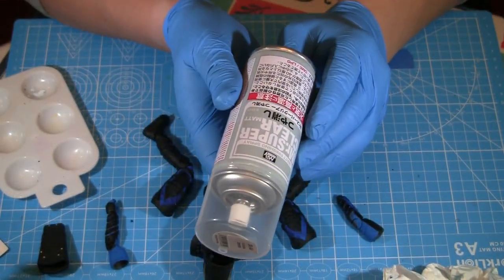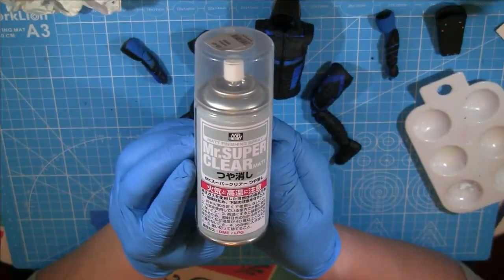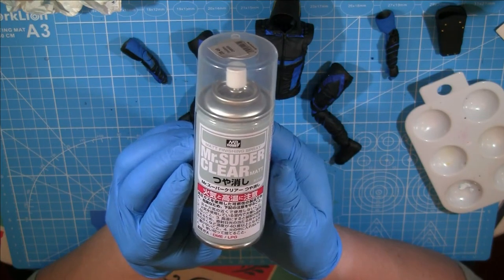Now that it's all done, I use Mr. Super Clear. Hold on a sec, let me spin that around for you so you can get a better look at the label. There you go, Mr. Super Clear - it's a matte finish.